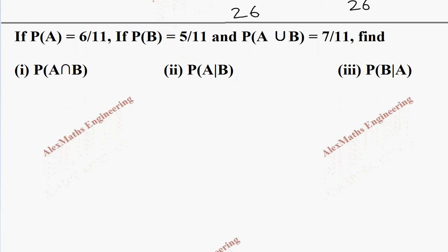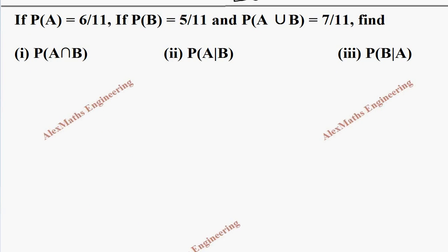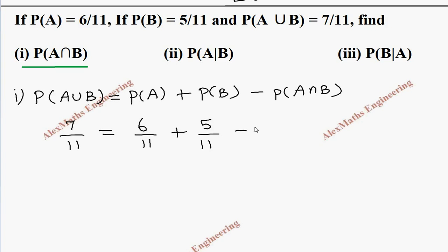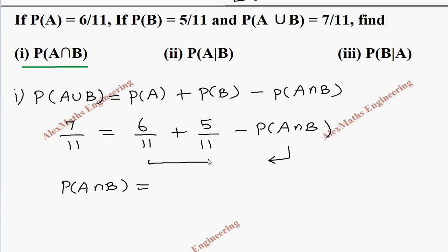In the next problem, they have given P(A), P(B), and P(A∪B). In the first subdivision, they want P(A∩B). Using the formula P(A∪B) = P(A) + P(B) − P(A∩B): 7/11 = 6/11 + 5/11 − P(A∩B). Taking P(A∩B) to the other side, we add 6/11 + 5/11 = 11/11, then subtract 7/11, giving P(A∩B) = 4/11.